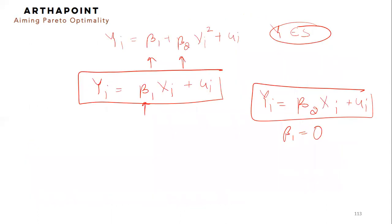For now, understand that the basic model that we have been talking about, which is yi is equal to beta 1 plus beta 2 xi plus ui.